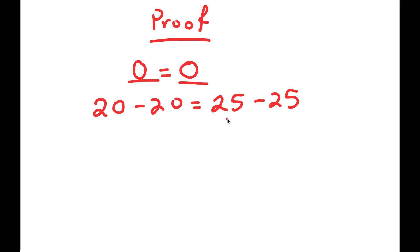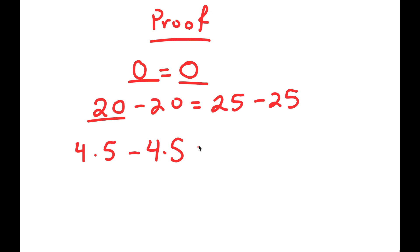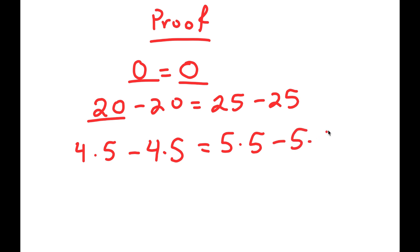From here, I'm going to rewrite 20 as 4 times 5. So now I get 4 times 5 minus 4 times 5 is equal to 25. I'm going to rewrite 25 as 5 times 5. So I get 4 times 5 minus 4 times 5 is equal to 5 times 5 minus 5 times 5.